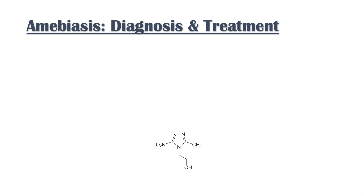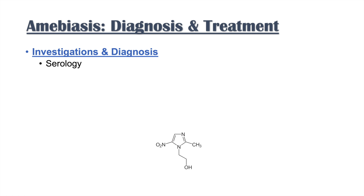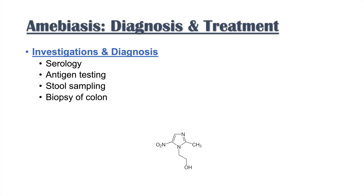How do we make the diagnosis? Investigations include serology — looking for antibodies against Entamoeba histolytica — as well as antigen testing and stool sampling looking for trophozoites. We may also need to do a biopsy of the colon, because these amoeba can burrow into the intestinal mucosa and you may need to examine tissue under a microscope to visualize the organisms.